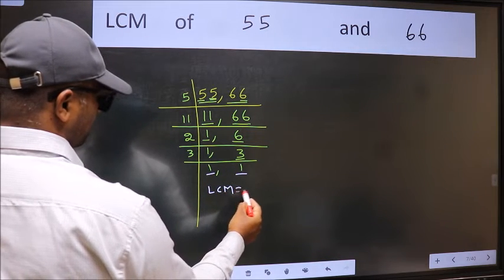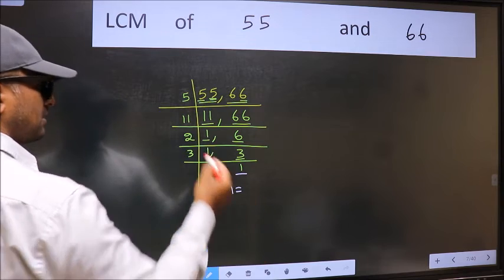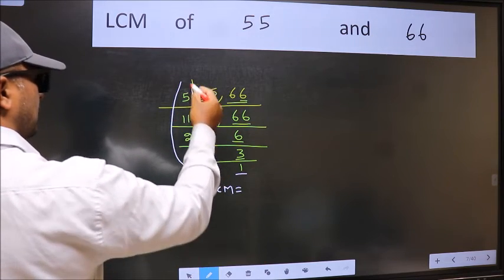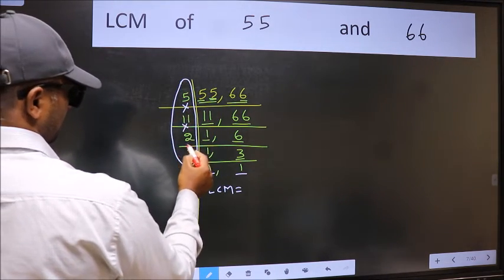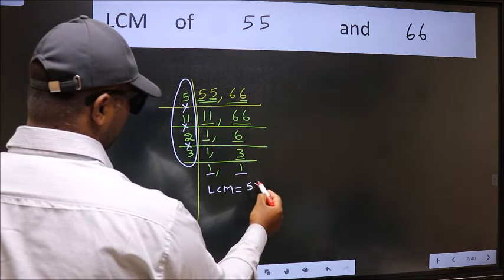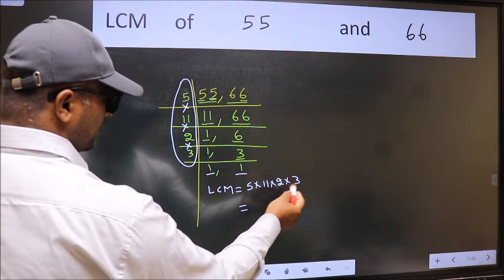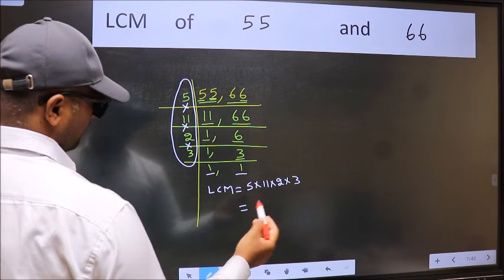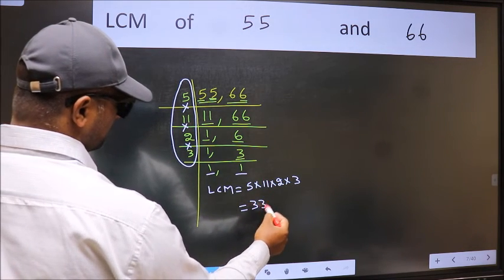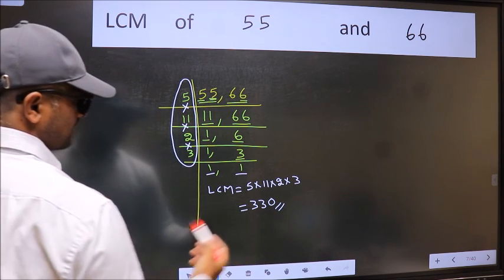So our LCM is, LCM is the product of these numbers. That is 5 into 11 into 2 into 3. When we multiply these numbers, we get 330 is our LCM.